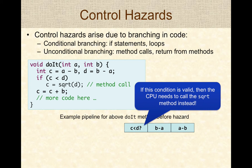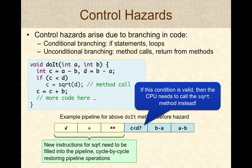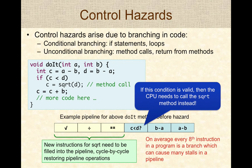The CPU must go back and fetch instructions for the square root method call, fill the pipeline cycle by cycle, and restore it to smooth operation. Given that on average every eighth instruction is a branch, this can cause many hazards or stalls in the pipeline.